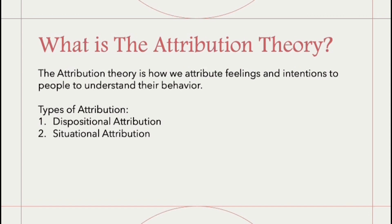On the other hand, situational or external attribution occurs when somebody believes that a person's behavior is driven by external factors. For example, the same person who was crying in the subway — you might assume that their behavior is due to an external situation, like they saw something traumatic out of the window.